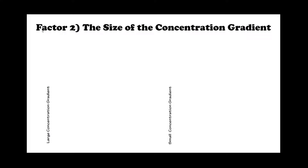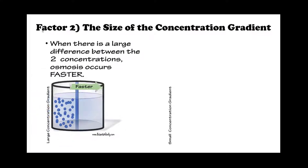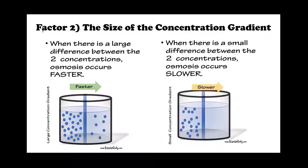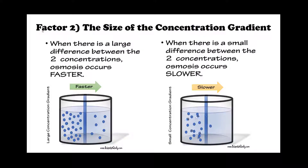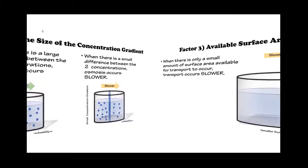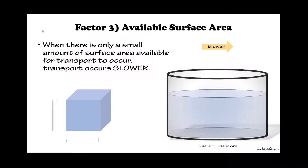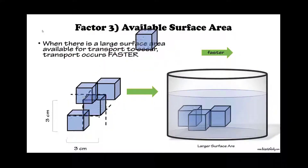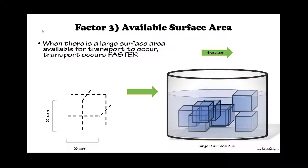Factor two: the size of the concentration gradient. When there is a large difference between the two concentrations, osmosis occurs faster. When there is a small difference between the two concentrations, osmosis will occur slower. Factor number three: available surface area. When there is only a small amount of surface area available for transport to occur, transport will occur more slowly. When there is a large surface area available for transport to occur, transport occurs faster.